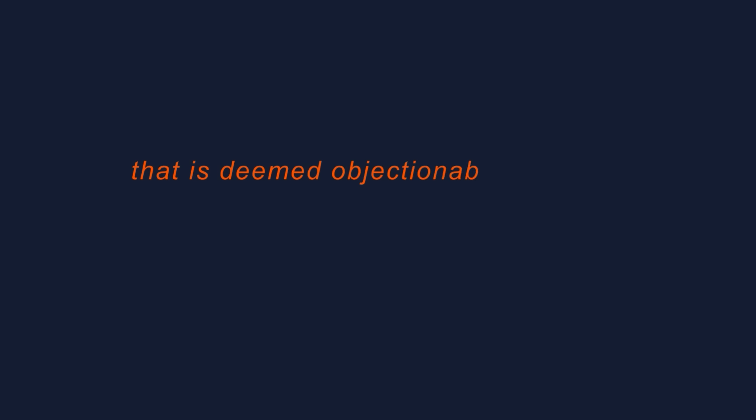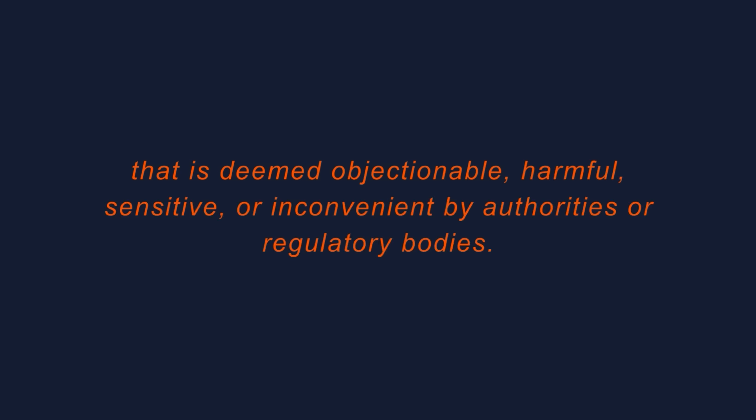For as long as we've had swear words, we've been trying to manage how people use them. Censorship is the suppression, prohibition, or restriction of speech, communication, or information deemed objectionable, harmful, sensitive, or inconvenient by authorities or regulatory bodies. Its goal is to limit or control access to information and ideas — often to protect societal norms, maintain public order, or prevent the spread of harmful or offensive material. Censorship is the reason why YouTubers have to say stupid things like 'unalive.' But wherever there is censorship, people will come up with creative ways to get around it — from euphemisms and minced oaths to replacing letters with asterisks or dashes.